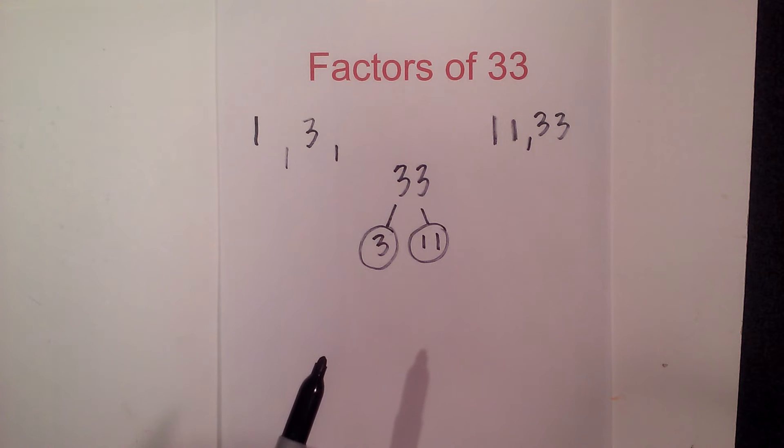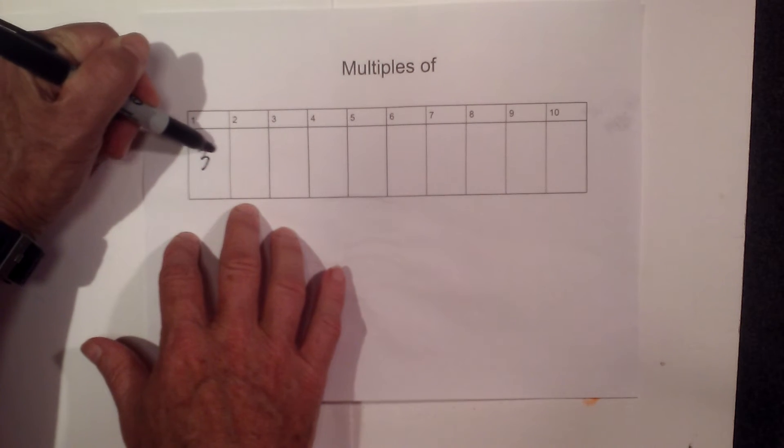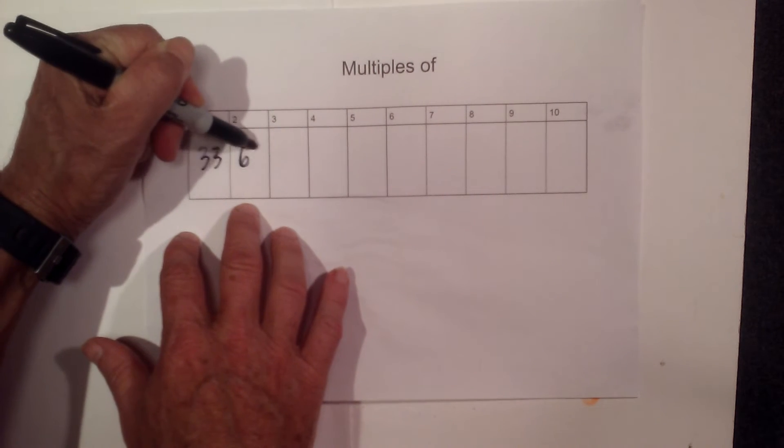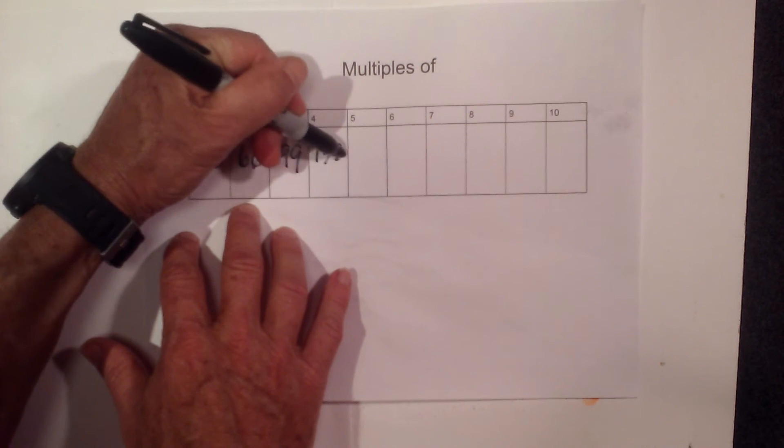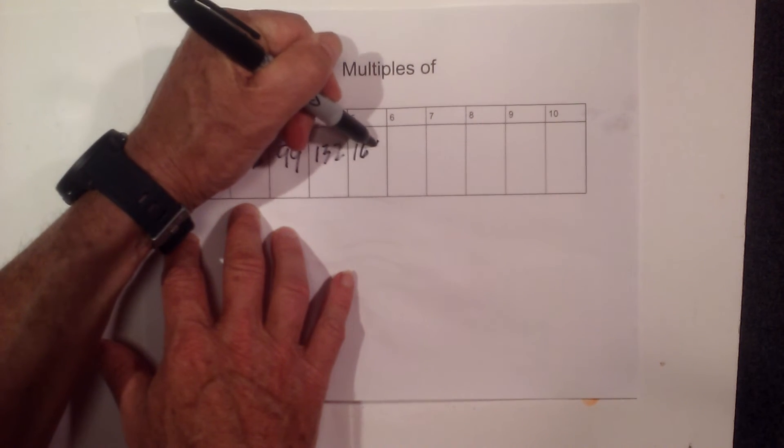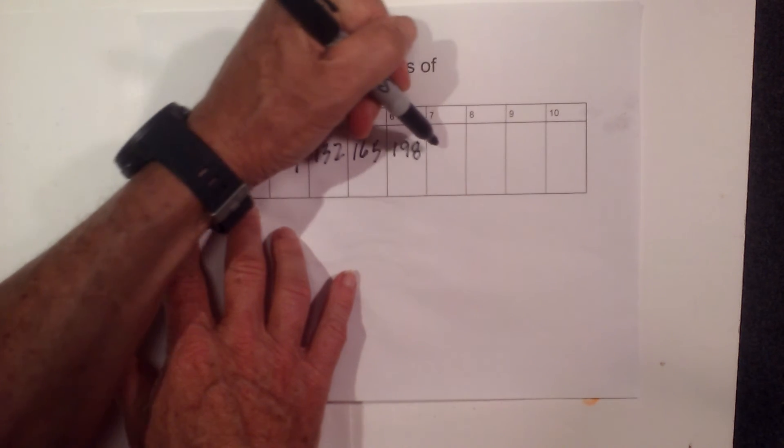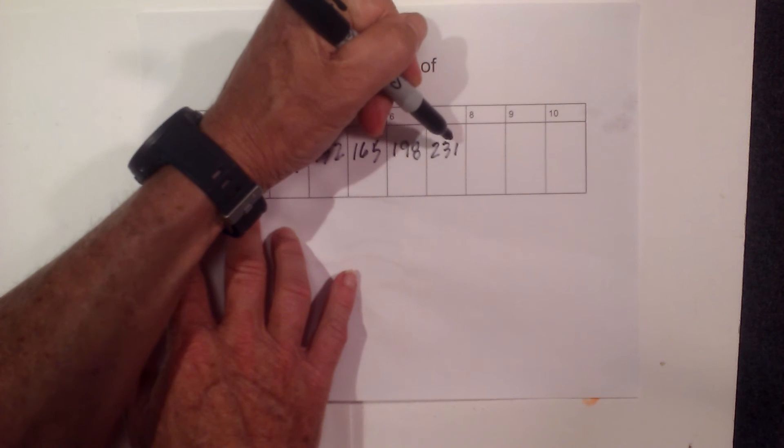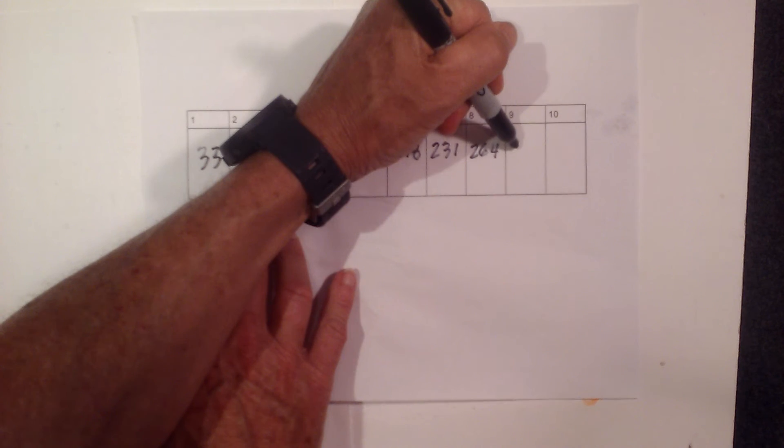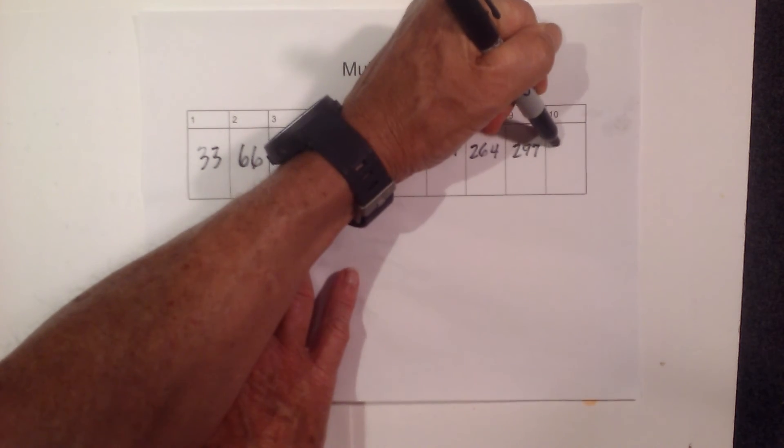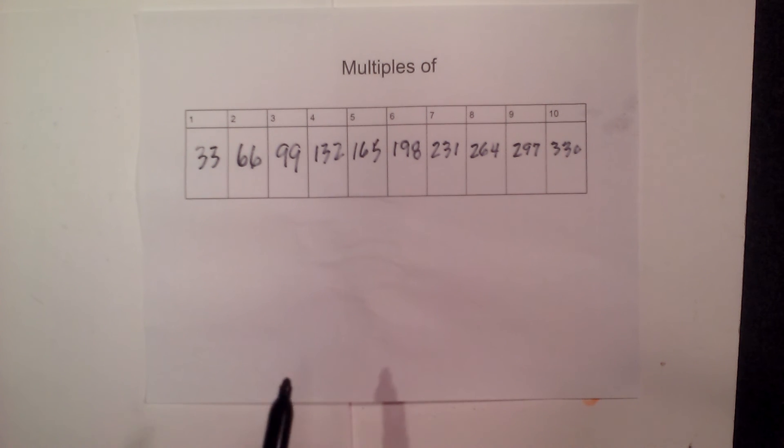Now let's talk about the multiples of 33. The multiples of 33 are 33, 66, 99, 132, 165, 198, 231, 264, 297, and 330. So there we go, the factors and multiples of 33.